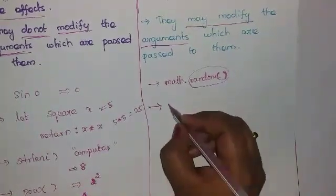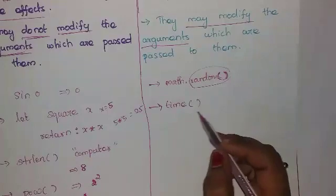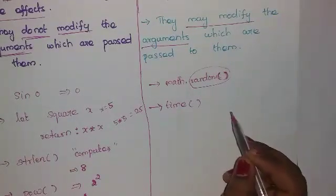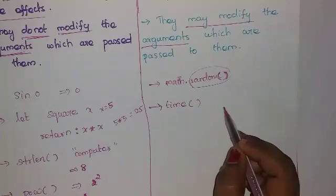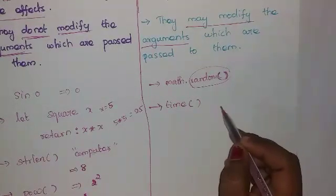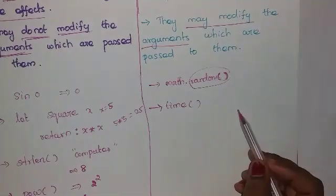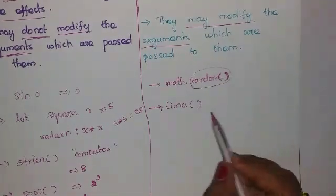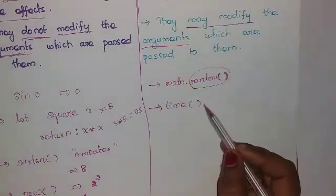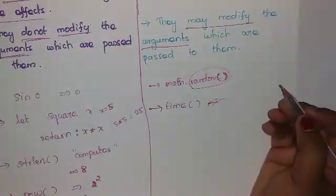Another example is the time function. If you call it now, the output displays the current time. If you call it again after 10 minutes, the output displays a different time. You get different results for the same function call, so this is also an impure function.